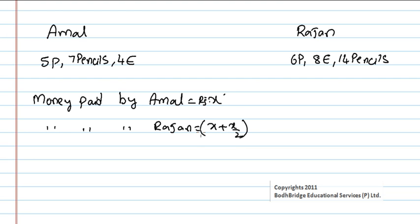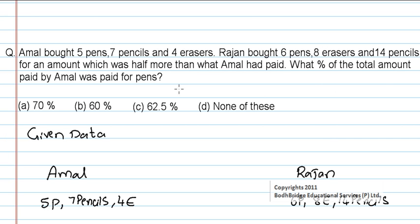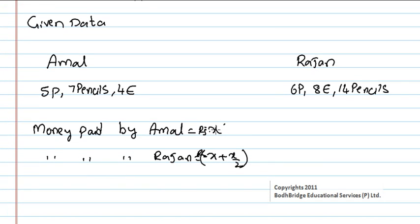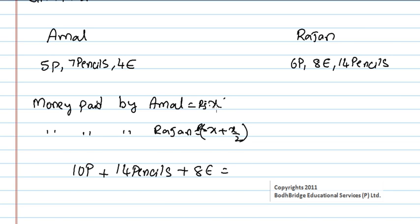Now we want to find what percent of the total amount paid by Amal was paid for pens. Amal is paying x rupees for all these things, but the question asks the percentage of money paid for pens. For the equation, if we multiply Amal's equation by 2, we get 10p plus 14 pencils plus 8 erasers is equal to 2x. This is the total amount equation.